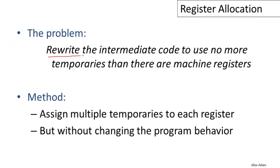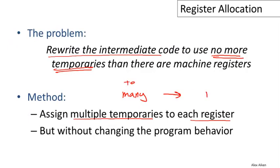The problem then is to rewrite the intermediate code to use no more temporaries than there are machine registers. And the way we're going to do that is we're going to assign multiple temporaries to each register, a many-to-one mapping from temporaries to registers.